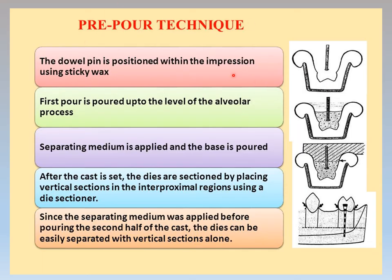In the pre-pour technique — also known as the dolphin technique — the dolphin pin is positioned within the impression using sticky wax. The first pour is poured up to the level of the alveolar ridge, then separating media is applied. After the cast sets, the die is sectioned. Since the separating media was applied before pouring the second half, the dies can be easily separated with a vertical section alone using a die sectioner placed in the interproximal region.